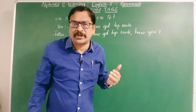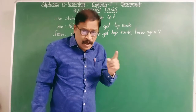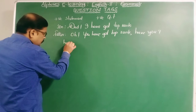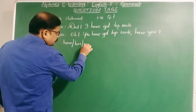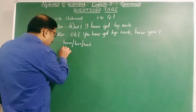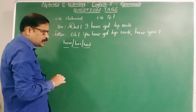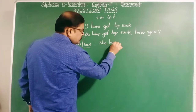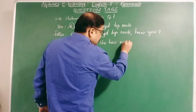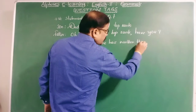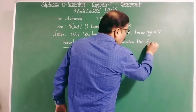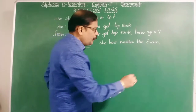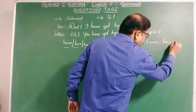Remember one more thing: when the helping verb is have, has, or had, we can take these in question tags. For example: she has written the exam — hasn't she? Here has acts as a helping verb, therefore we take has and write hasn't she.